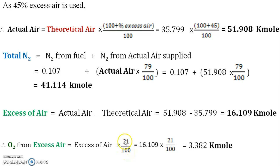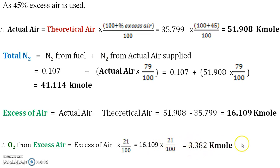Note the important distinction: in the first part when calculating air from oxygen, 100 was in the numerator and 21 was in the denominator. Now, when finding oxygen from air, 21 is in the numerator and 100 is in the denominator. By multiplying by this factor of 21/100, you get the amount of oxygen present in the excess air.